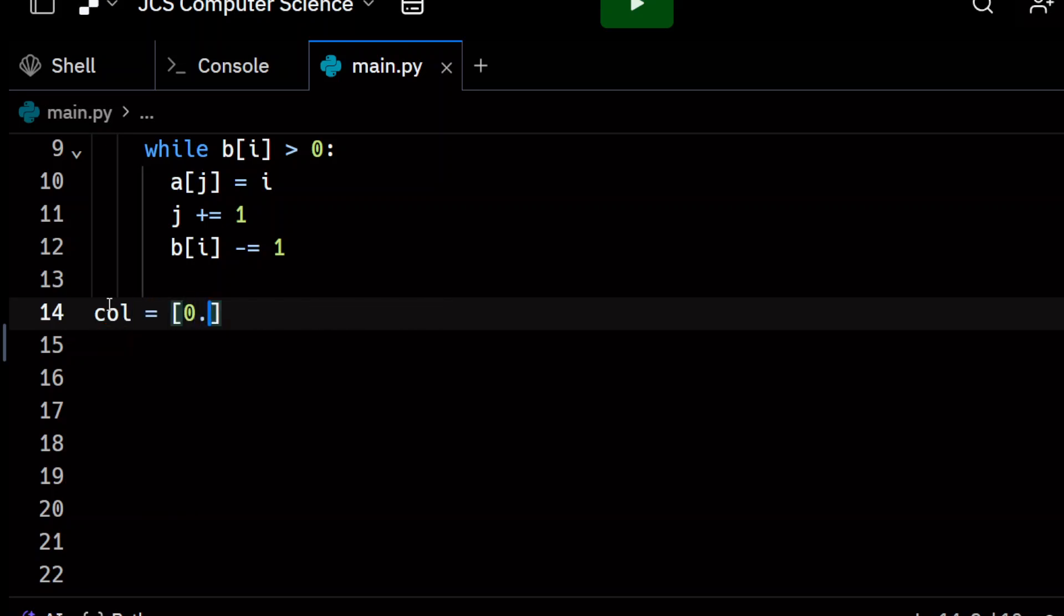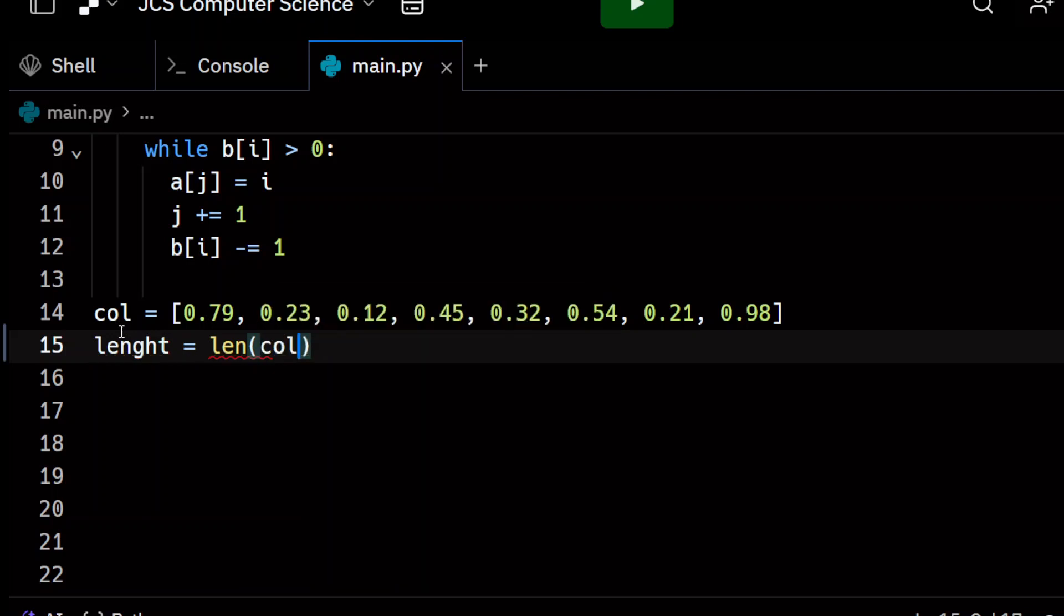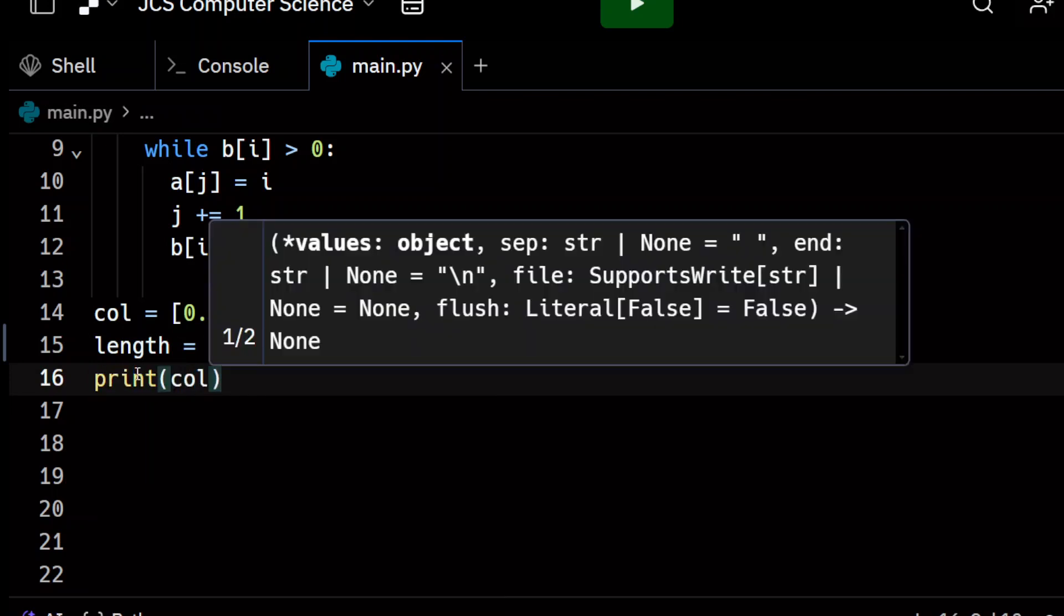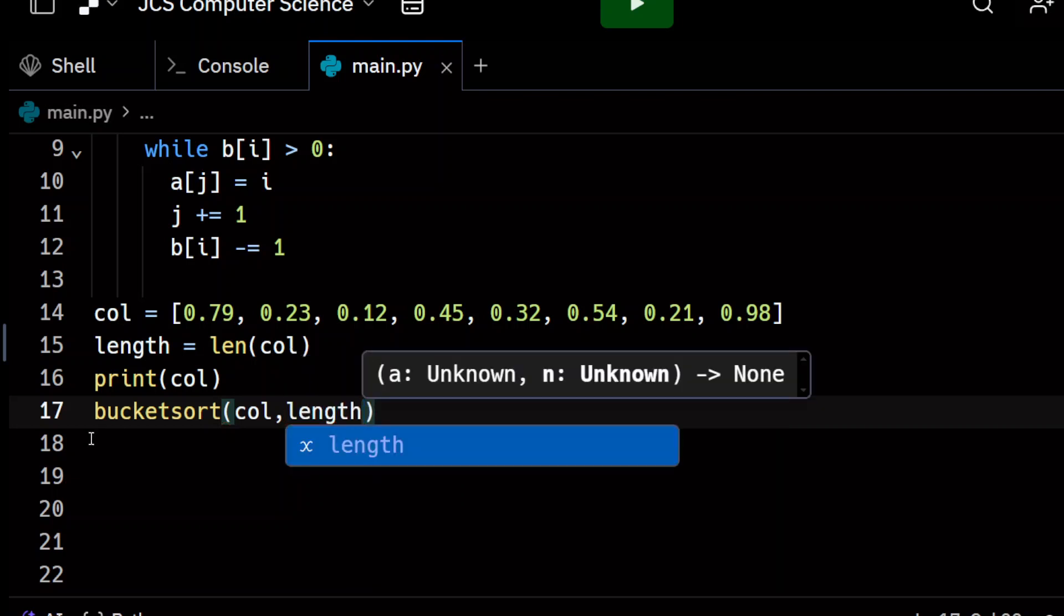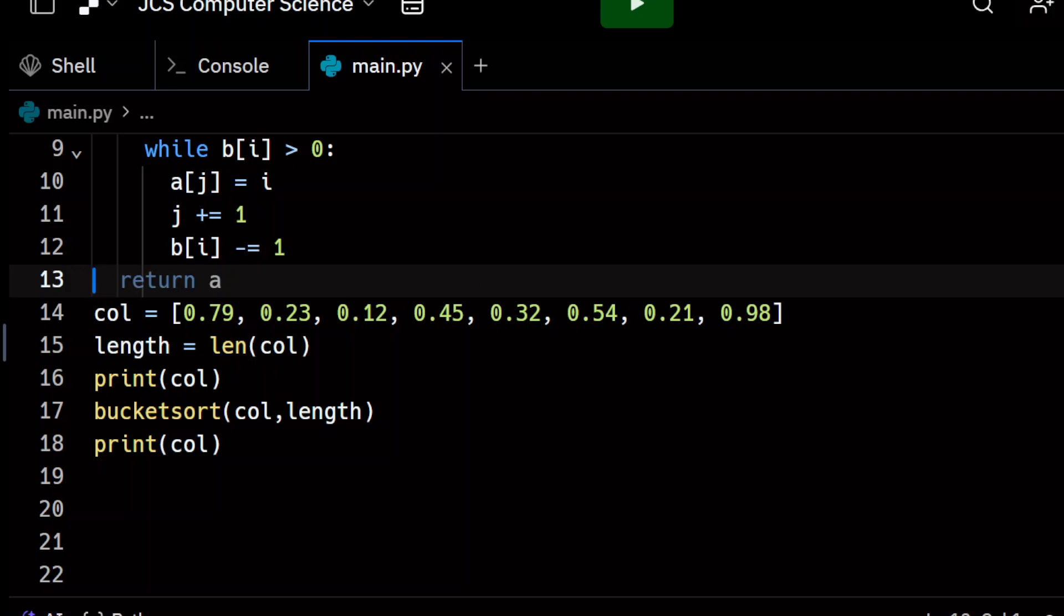Call equals zero dot seven nine. Let's get some values in a zero dot two three, zero dot one four, one two, zero dot four five, zero dot five four, zero dot two one. And n equals length or length was len of call and let's print the collection. Let's call bucket sort and then print the hopefully the sorted collection, which is essentially a list. So let's see if we can get this thing solved on the JCS computer science channel with coder J here.